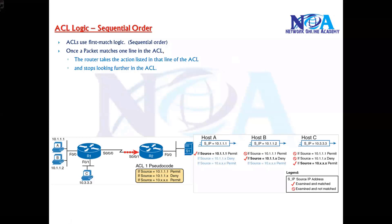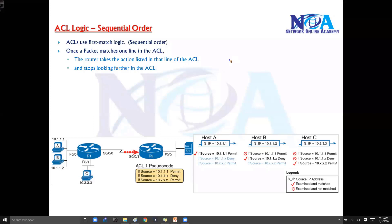The next thing we will try to understand is the ACL logic — basically how ACL works. It works in a sequential order. We are ready to go with the configuration, but before that we'll try to understand the order in which you write the ACLs, because this is very important. If you write in a wrong order, your ACL may not work. Basically, ACL uses the first-match logic — in other words, it works in a sequential order.